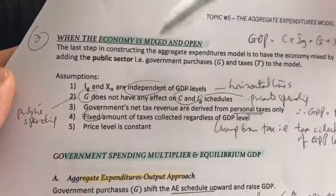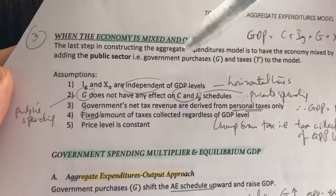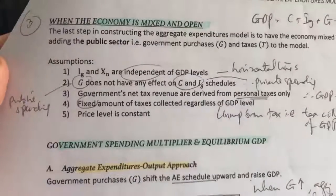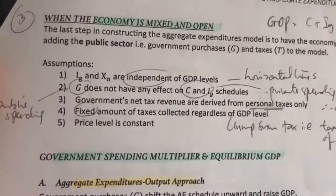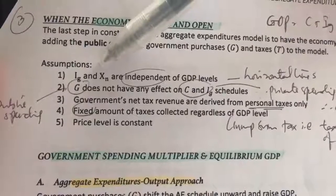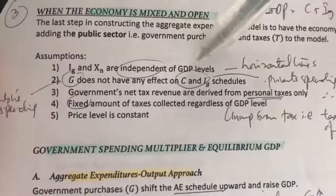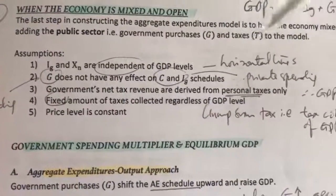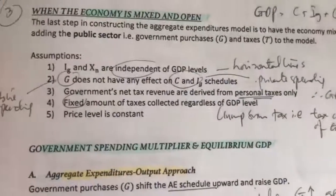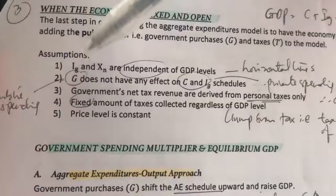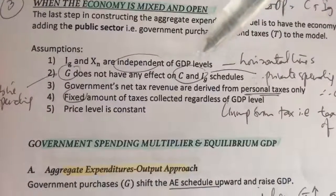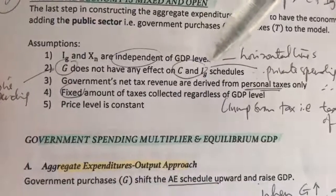Let's look at some of the assumptions of the aggregate expenditures model when the economy is mixed and open. Firstly, we assume that the investment schedule and the net export schedule are both independent of GDP levels — in other words, they are both horizontal straight lines. Secondly, we assume that G, or public spending, does not have any effect on consumption and investment schedules.